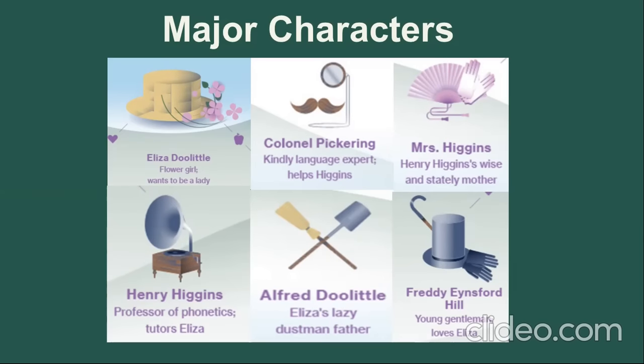The last important character is Freddie Eynsford Hill. Freddie first meets Eliza during a meeting with his mother and sister at Mrs. Higgins' house. He falls in love with Eliza and writes letters to her.